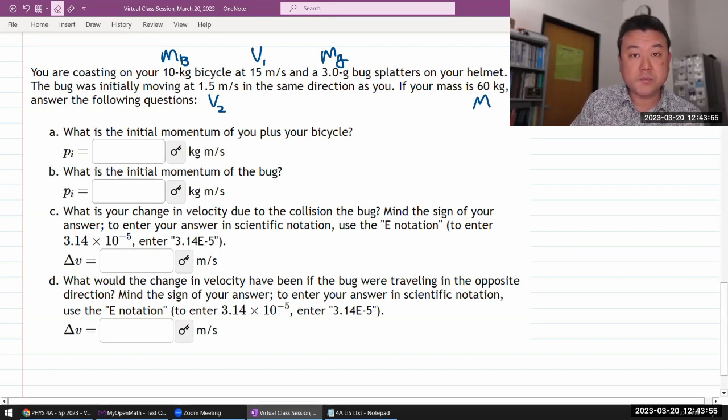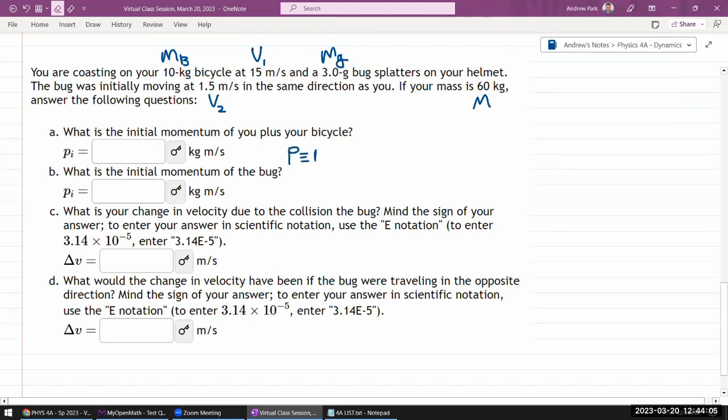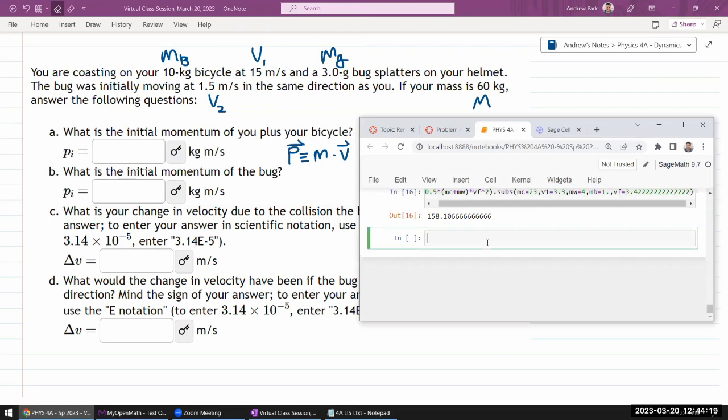What was the initial momentum of you plus your bicycle? Okay, so I'm just going to be using the definition of momentum, which is defined as mass times velocity. And if necessary, you can describe it as a vector quantity to highlight the direction. Let's just work through it one by one. And once we have all the numbers, we'll just plug them in all together. For ease of understanding, I'm just going to define these variables.